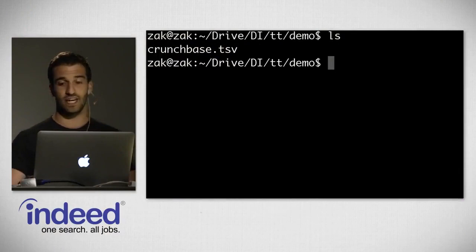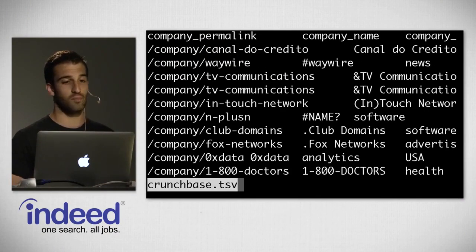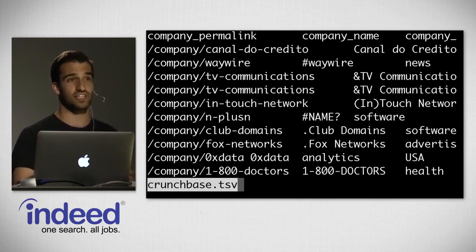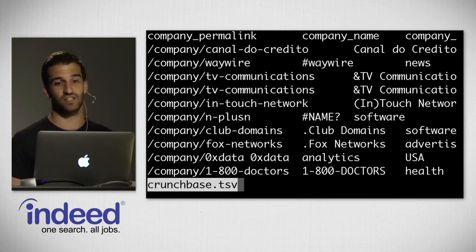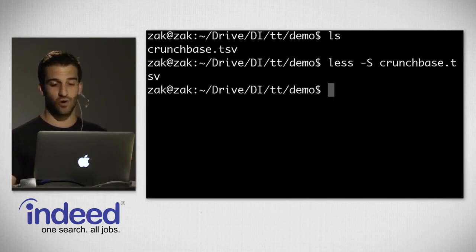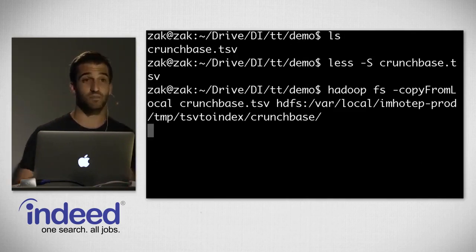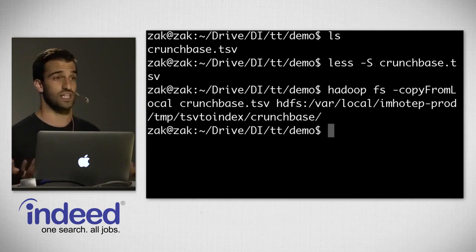I'm going to upload a dataset to Imhotep live right now so that we can explore it shortly. In this directory I have crunchbase.tsv — a file I downloaded from Crunchbase's public website. It's just tabular data. We have company permalink as a field, the company name, category code. I'm going to go ahead and upload this to Hadoop — copy from local and put it into a special directory inside Hadoop that Imhotep knows to index.